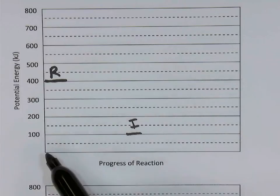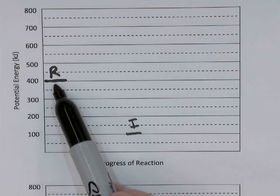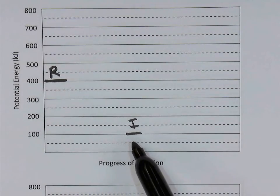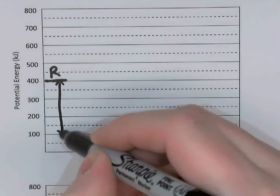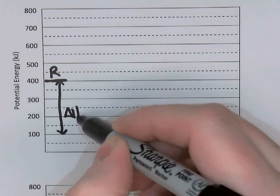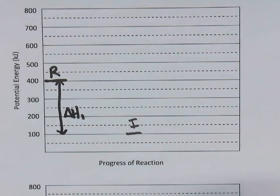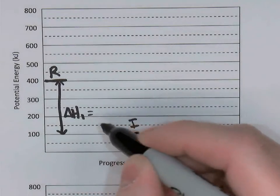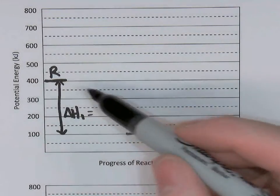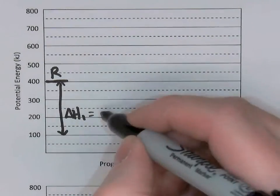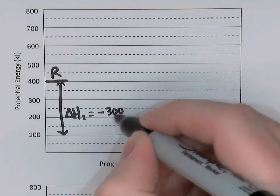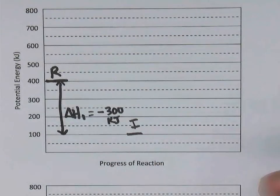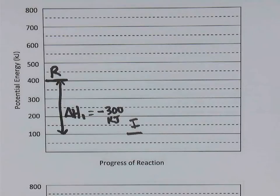Now that we know the reactants started at 400 kilojoules and the intermediates are at 100 kilojoules, we can label the delta H for step one. Delta H for step one is the difference between those two plateaus. Because we went from 400 down to 100, delta H is negative — negative 300 kilojoules.